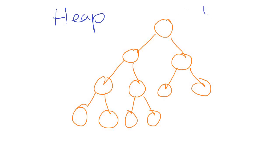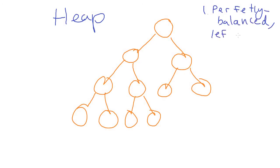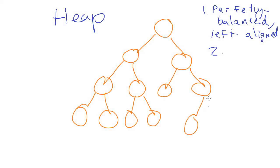The first rule for a heap is that it must be perfectly balanced and left aligned. This is not true of a binary search tree — we can end up with degenerate binary search trees that aren't balanced. But for a heap, it's baked into the definition that it has to be perfectly balanced and left aligned. That means nodes must be as shifted to the left as possible — a node cannot have a right child without also having a left child.